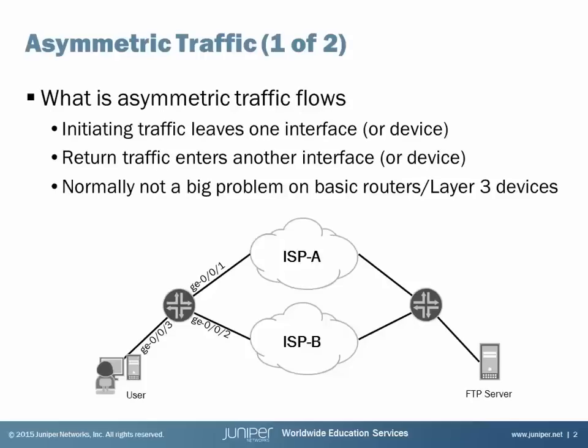Here on the far left, bottom left side, we have the user who's connecting to their local router via the GigE0/0/3 interface. Their local router is dual-homed to ISP-A and ISP-B, ISP-A being the primary and ISP-B being the backup. And then from there we have the FTP server on the far right, and the user wants to communicate with this FTP server.